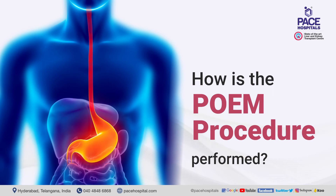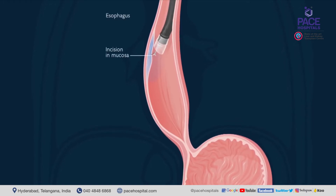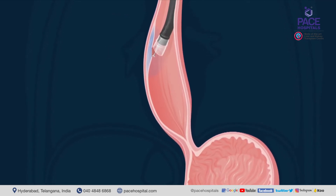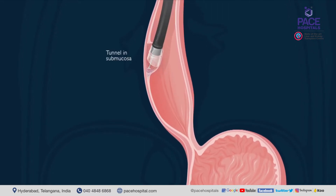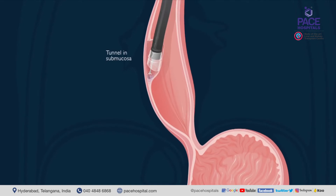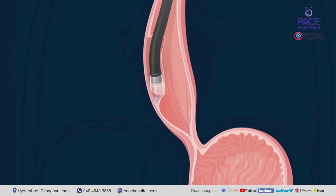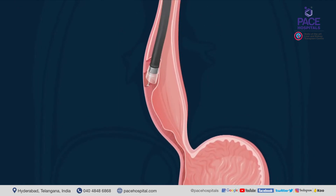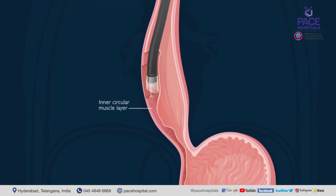How is the POEM procedure performed? During the procedure, the doctor passes a special endoscope through the mouth to reach the esophagus. An incision is made and fluid is injected into the internal lining of the esophagus. A tunnel is made in the esophageal wall, called submucosal tunneling. Myotomy is then performed, where the muscular layer is cut on the side of the esophagus, the lower esophagus, and upper side of the stomach.